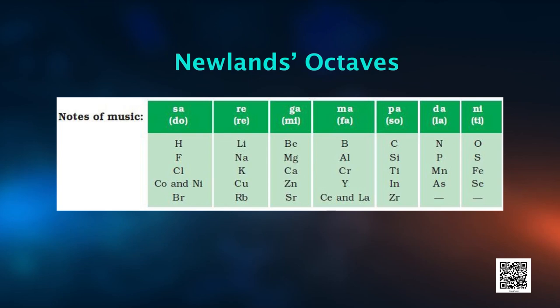Newlands started with hydrogen, the element having the lowest atomic mass, and ended at thorium, the 56th element. In his table each row has seven elements. He found that every first and eighth element had the same chemical properties, and compared this to the octaves found in music — therefore calling it the Law of Octaves, known as Newland's Law of Octaves.